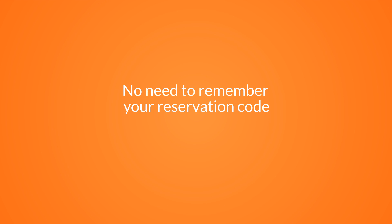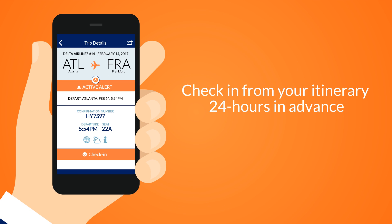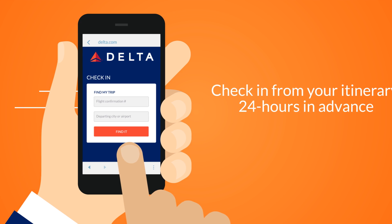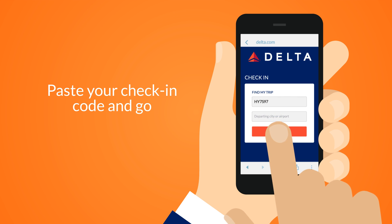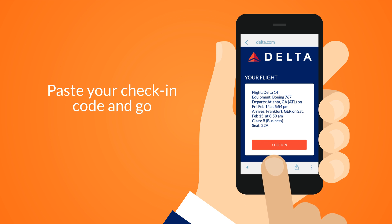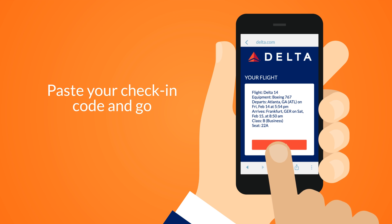No need to remember your reservation code. With World Mobile, access your itinerary 24 hours in advance of a flight and tap check-in. World Mobile will auto-copy your reservation code and link you directly to the airline check-in page. Just paste your code and go.